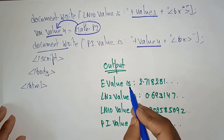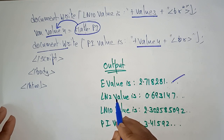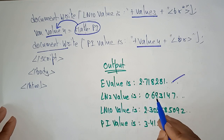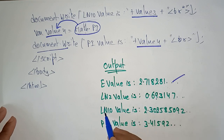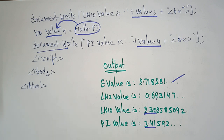Looking at the output: the E value is the exponent value, the natural logarithm of 2 is 0.69, the natural logarithm of 10 is 2.30, and the pi value is 3.14. This is how you use Math properties and methods in JavaScript. Thank you.